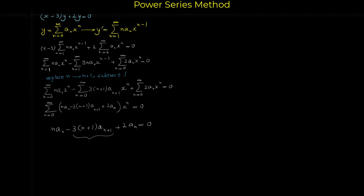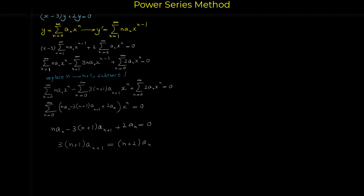Setting the bracket equal to zero gives: n a_n minus 3(n plus 1) a_{n+1} plus 2 a_n equals 0. Moving the a_{n+1} term to the other side and factoring a_n from the remaining two terms gives 3(n plus 1) a_{n+1} equals (n plus 2) a_n. Dividing both sides by 3(n plus 1), we obtain the recurrence relation: a_{n+1} equals (n plus 2) over 3(n plus 1) times a_n.